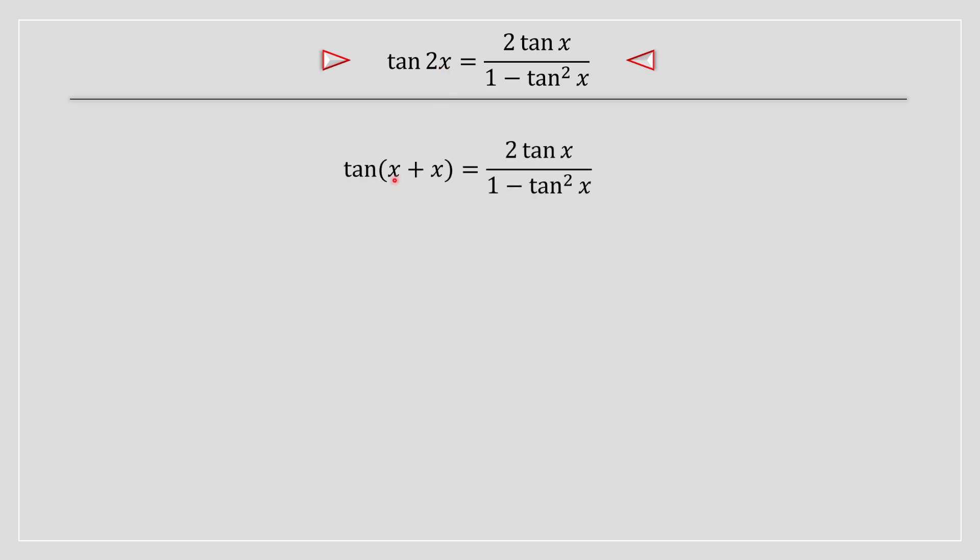What you're going to have to do once again is separate 2x, meaning write it as an addition x plus x. We are then going to apply this trig identity. This is the additive trig identity for the tan function and we can rewrite it as this.